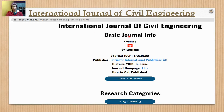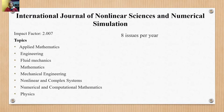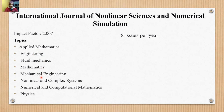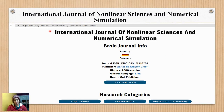The fourth journal is the International Journal of Non-Linear Science and Numerical Simulation. Its impact factor is 2.007, with eight issues per year. It covers a large area of topics including Mathematics, Engineering, Mechanics, Mechanical Engineering, and Physics — including physical and mathematical physics. From the SCIJournal.org screenshot, you can see this journal has been running since 2000 and is a Germany-based publication.